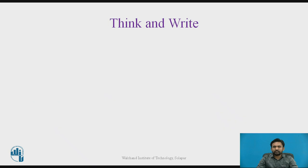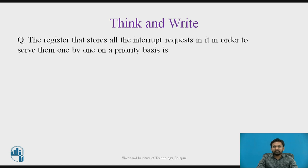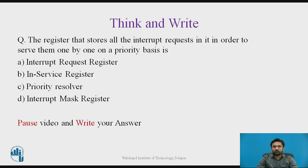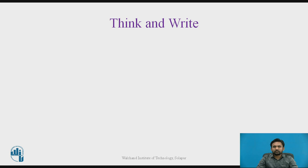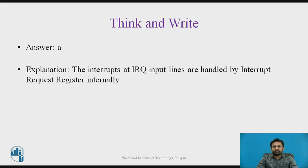Here is a question — the register that stores all the interrupt requests in order to serve them one by one on a priority basis is: A) Interrupt Request Register, B) In-Service Register, C) Priority Resolver, or D) Interrupt Mask Register. The answer is A — the interrupts at interrupt request input lines are handled by the Interrupt Request Register internally.